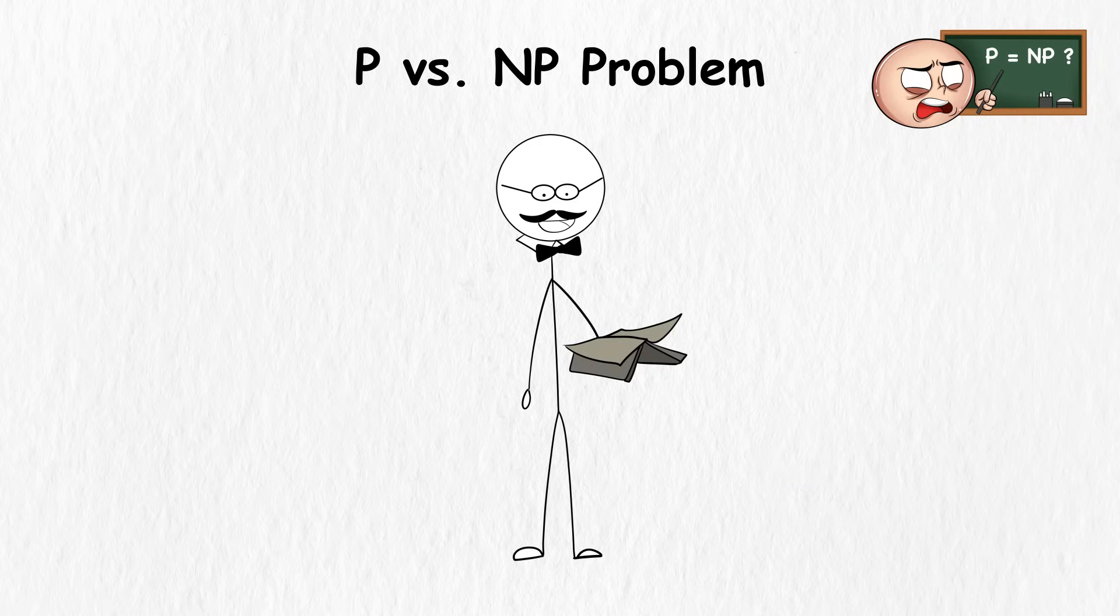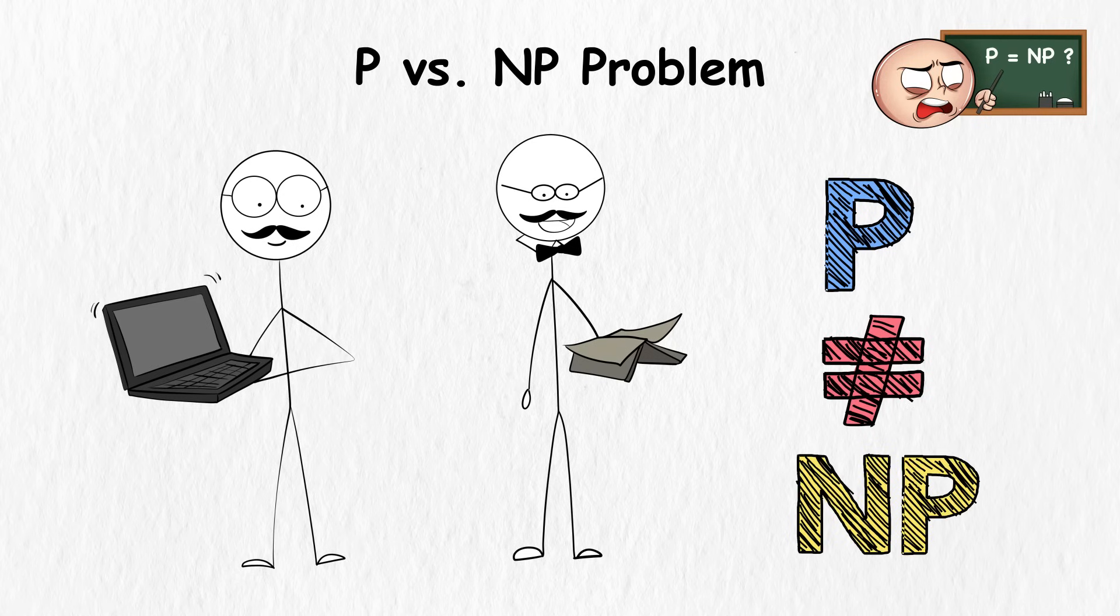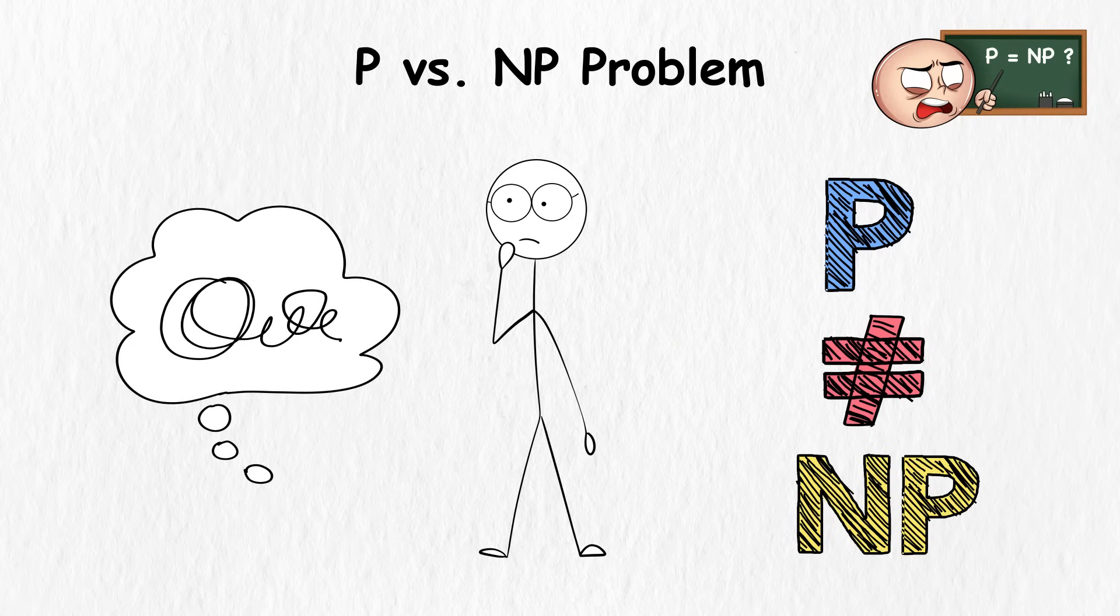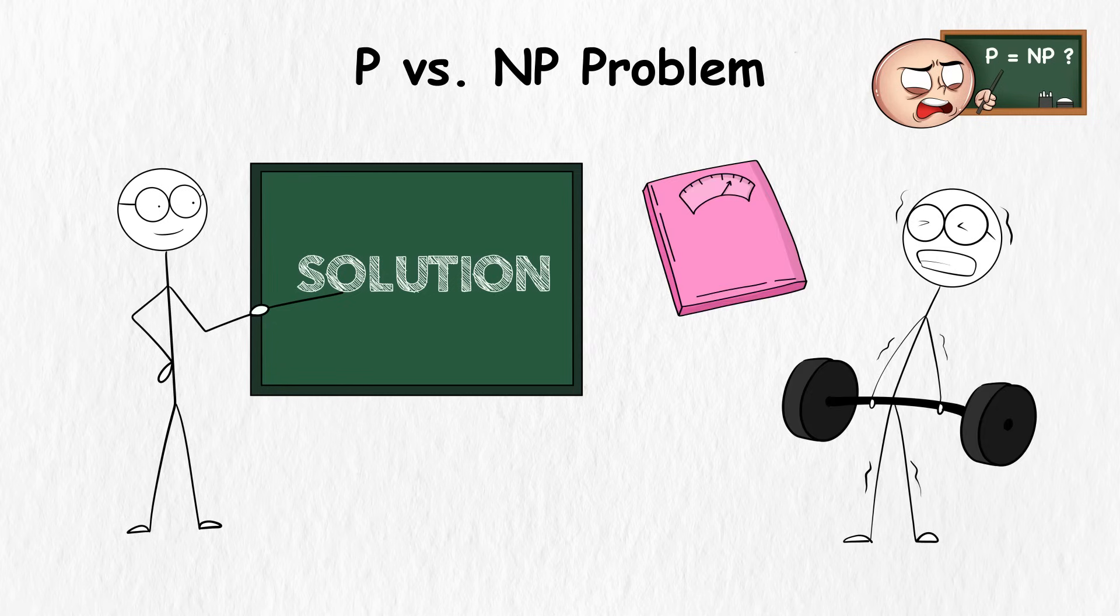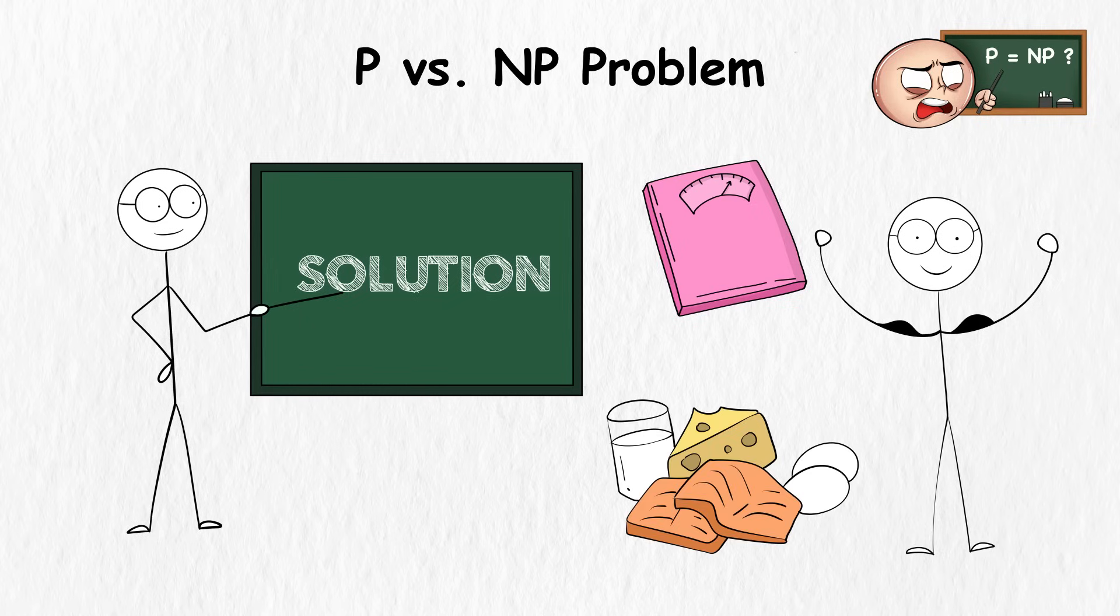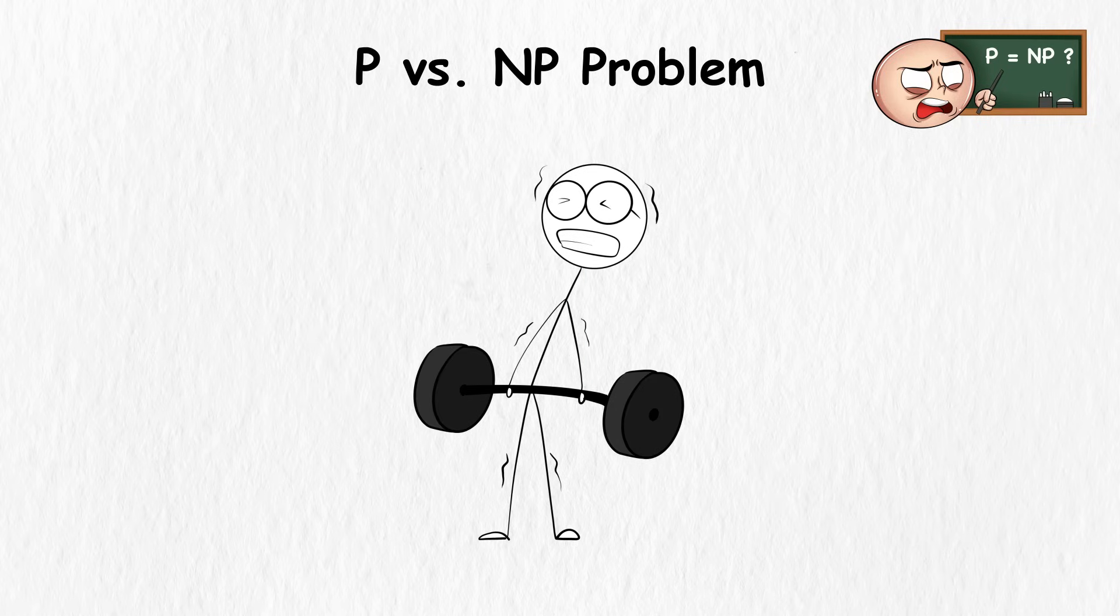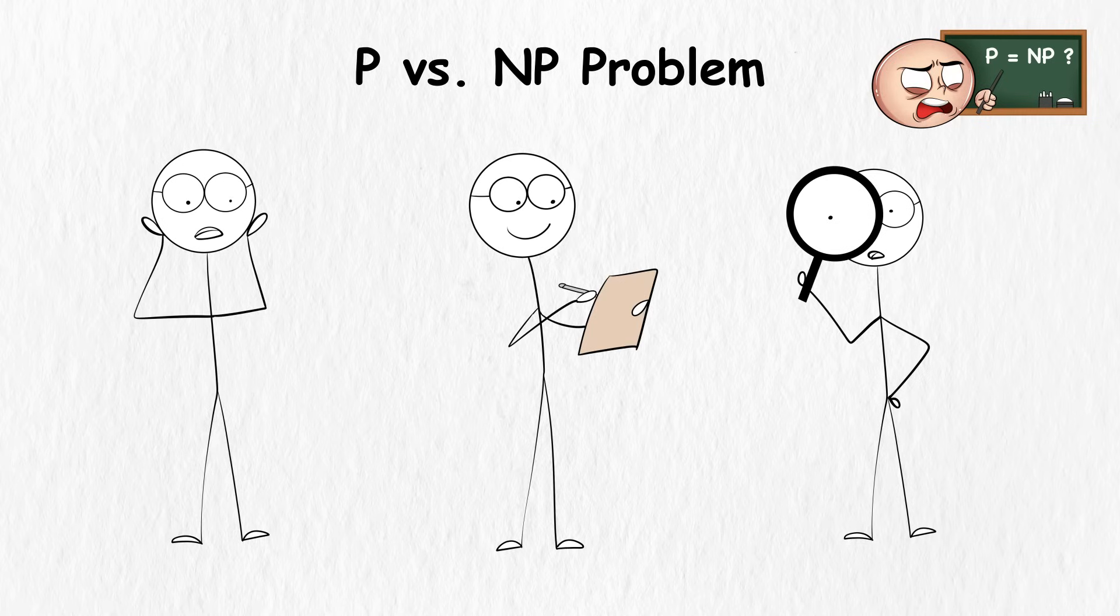However, mathematicians and computer scientists believe that P does not equal NP because some problems are hard to solve, even if you could verify the solution easily. For example, deadlifting a thousand pounds is hard even if you know the solution is getting stronger and eating lots of protein. You'll still struggle to lift the weight, like how a problem that is inherently hard to solve is still hard to solve, even if you know the solution.